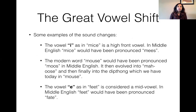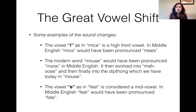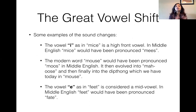Here are some examples of the sound changes. The vowel 'ee', as in 'meese', would have been pronounced 'meese' in Middle English, and the modern word 'mouse' would have been pronounced 'moose' in Middle English. So it became 'mouse' and then 'mouse', which is the final diphthong we have in Modern English. Similarly, 'feet' is a mid-vowel, and it would have been pronounced 'feit' in Middle English. The Great Vowel Shift illustrates how words started becoming more like how we pronounce them today in Modern English.